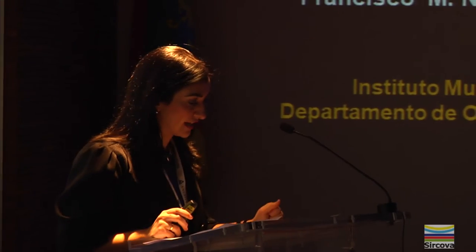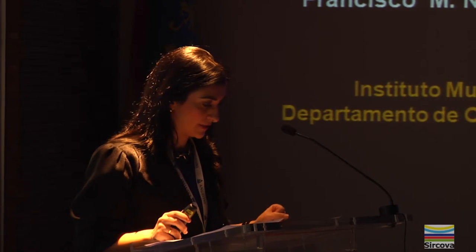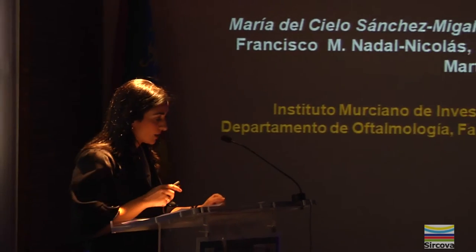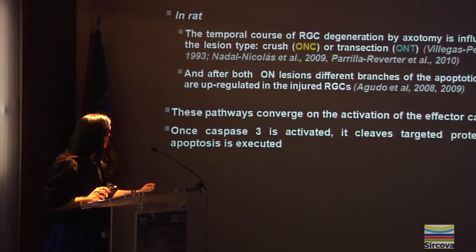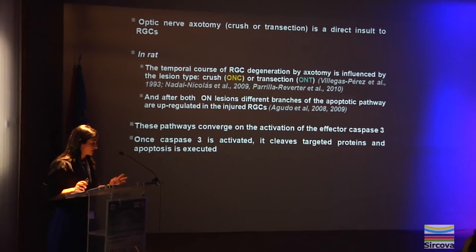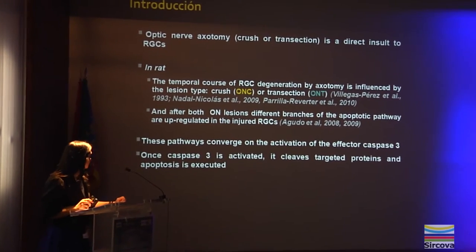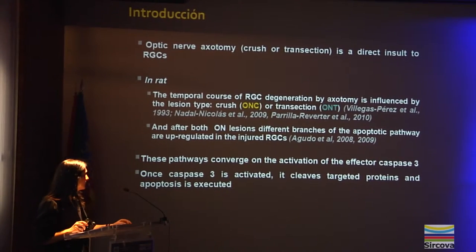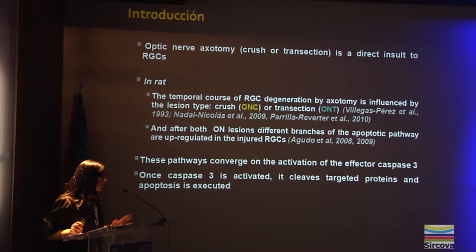Good afternoon. This work has been carried out at the Laboratory of Experimental Ophthalmology in the University of Murcia. Optic nerve axotomy affects retinal ganglion cells. In studies from our laboratory, it was demonstrated that the temporal course of ganglion cell degeneration by axotomy is influenced by the lesion type.